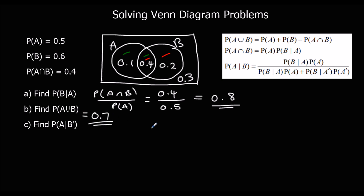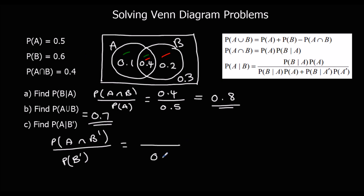P(A|not B) = P(A and not B) / P(not B). The A sections are these two; the not-B sections are these two. The intersection — A and not B — is just the 0.1 section. So P(A|not B) = 0.1 / 0.5 = 0.25. Wait, that gives us 0.25.